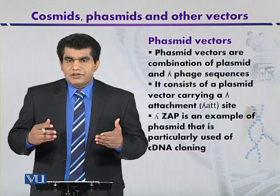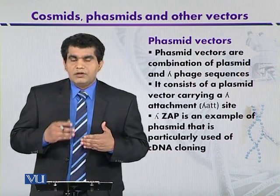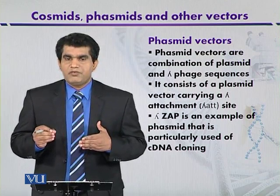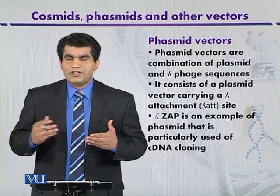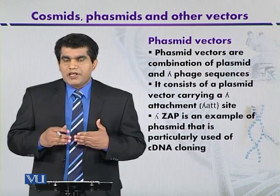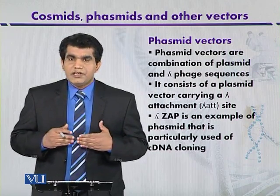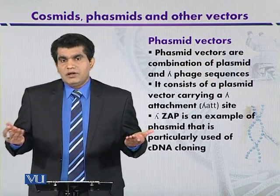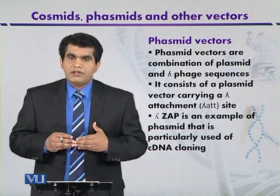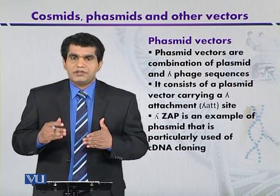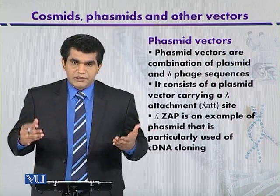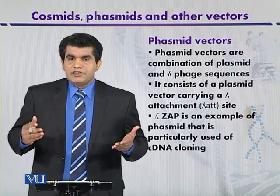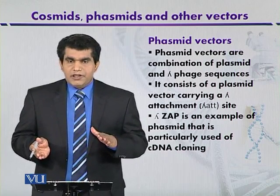Phasmids have certain advantages over other cloning vectors. An example is the lambda ZAP vector, which can be used for cloning of cDNA. Lambda ZAP is a type of insertional vector where foreign DNA can be inserted after treatment with the appropriate restriction enzyme.